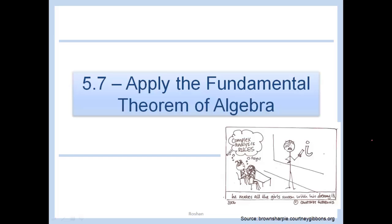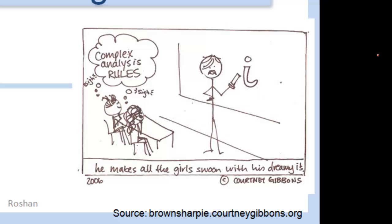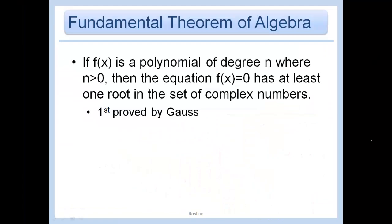Section 5.7: Apply the fundamental theorem of algebra. If f of x is a polynomial of degree n where n is greater than zero, then the equation f of x equals zero has at least one root in the set of complex numbers. A root is just a zero, so it's saying we have at least one solution to f of x equals zero.